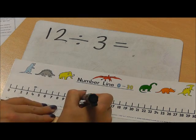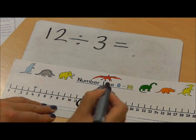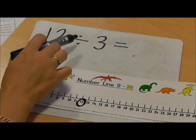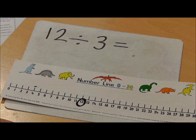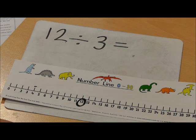First of all, I'm going to identify my starting number on the number line. So I have 12. I want to divide it by 3. So on my number line, I'm going to take away chunks of 3 until I get to 0.